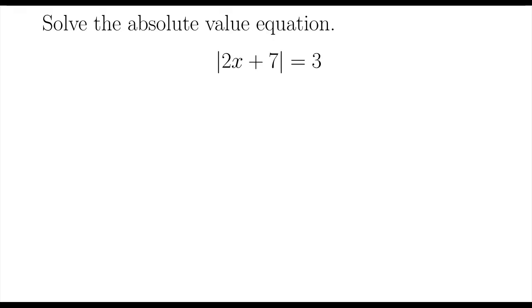Let's solve the absolute value equation. The absolute value of 2x plus 7 is equal to 3. This interior part, 2x plus 7, could equal 3 or it could equal negative 3. In either case you end